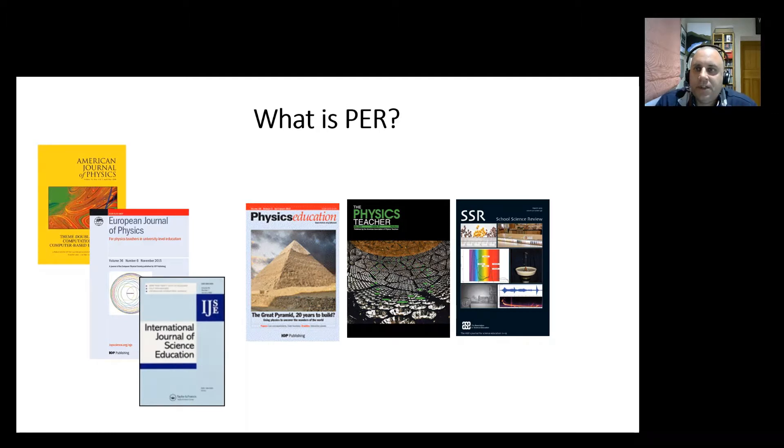What is PER? In the simplest sense, it's just any academic research that's done about teaching and learning in physics. All of those journals you can see there, some of which you may be familiar with, could be considered PER. Generally, people talk about PER and they're referring to the ones towards the left-hand side here, American Journal of Physics, European Journal of Physics, International Journal of Science Education.